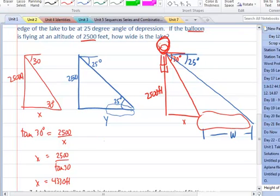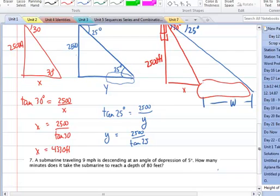You would say the tangent of 25 degrees equals 2,500 the opposite over the adjacent. And now y equals 2,500 divided by the tangent of 25. And I'll calculate that. That's 5,361 feet.